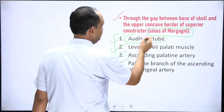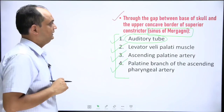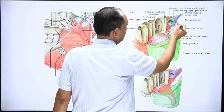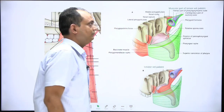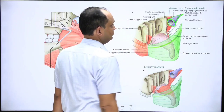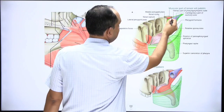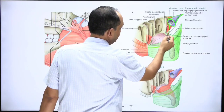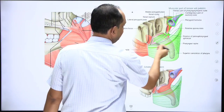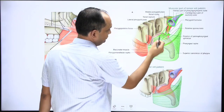The auditory tube runs very close to the base of skull in the sulcus tubae. It enters into the medial wall of the nasopharynx, and the tube has two muscle attachments: tensor veli palatini and levator veli palatini. The tensor veli palatini passes below the pterygoid hamulus and becomes aponeurotic to form the fibrous skeleton of the soft palate, while the levator veli palatini is an oblique muscle superior to the hamulus.